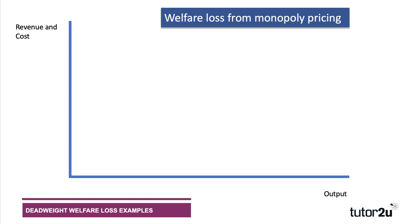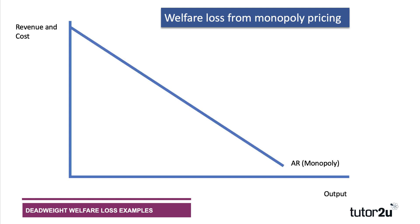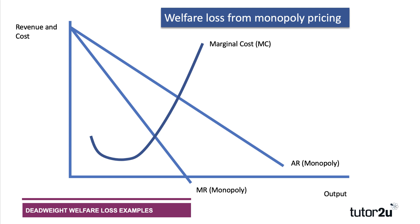Let's build up our analysis diagram with revenue and cost on the y-axis and output on the x-axis. Here's our monopoly demand curve — it's a good idea when showing welfare loss and consumer surplus to have this demand curve, which is the monopoly's average revenue curve, cutting the y-axis. AR is downward sloping, so it will have a downward sloping marginal revenue curve as well. Let's put in place a marginal cost curve for the monopolist.